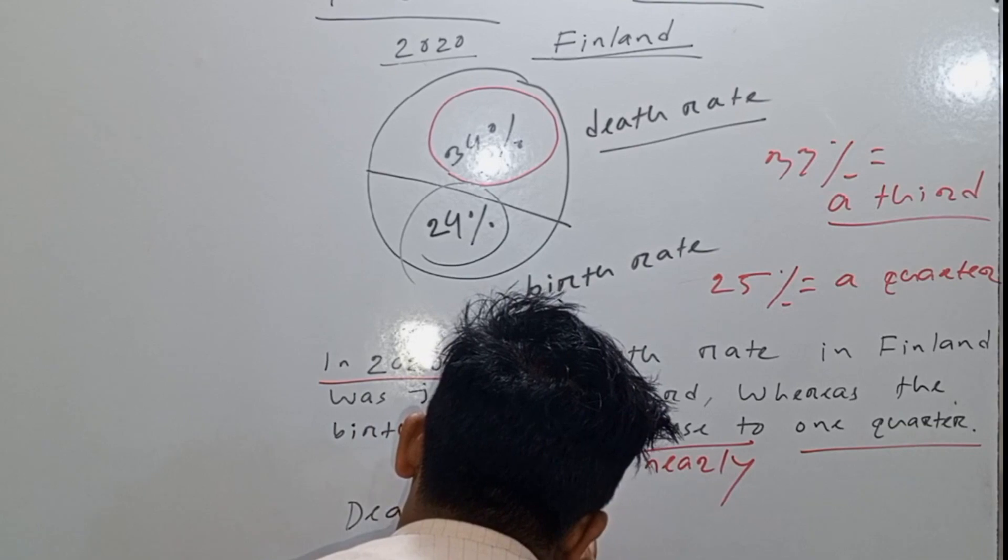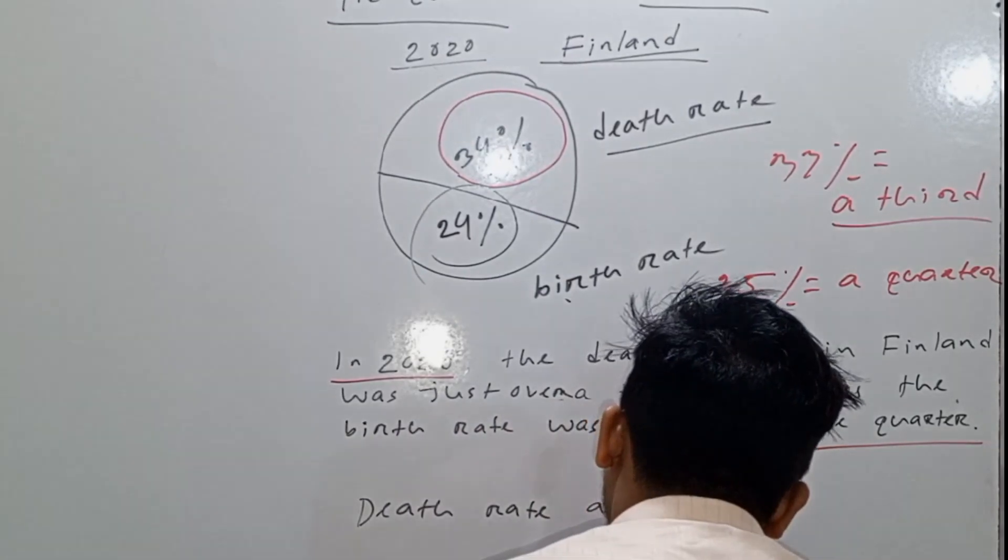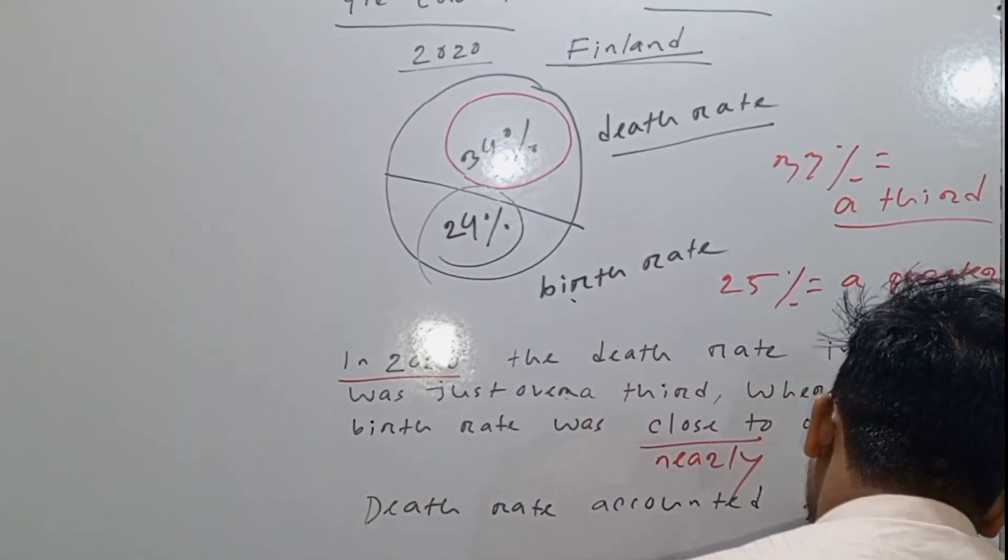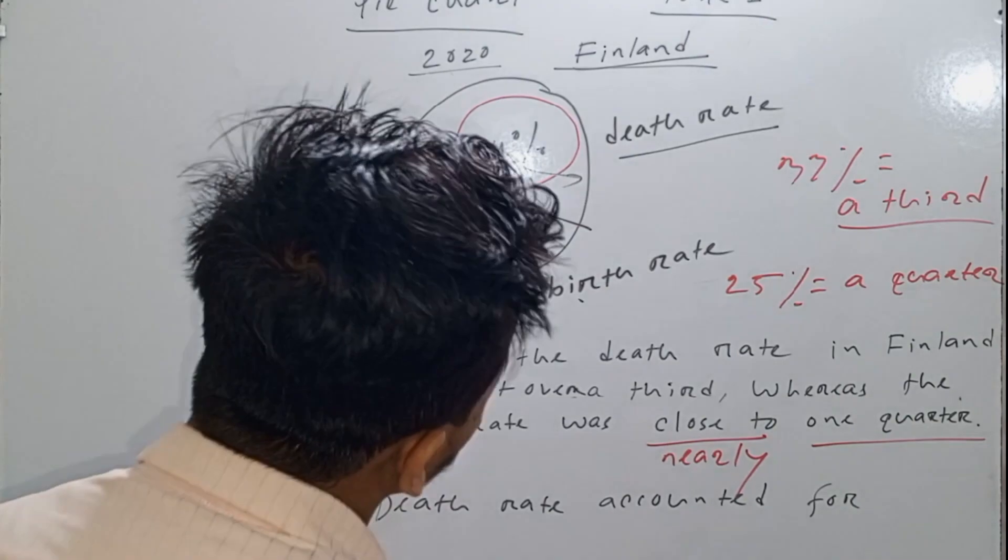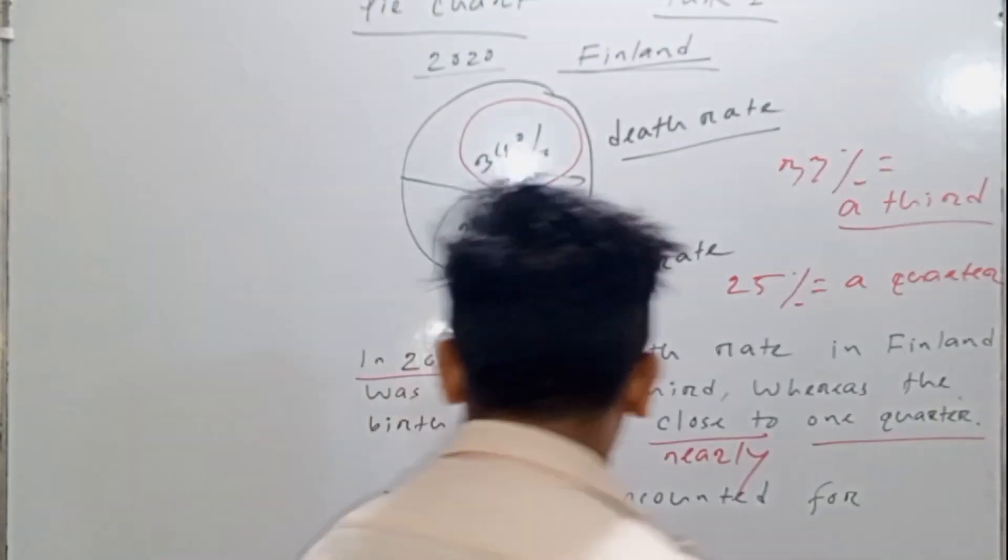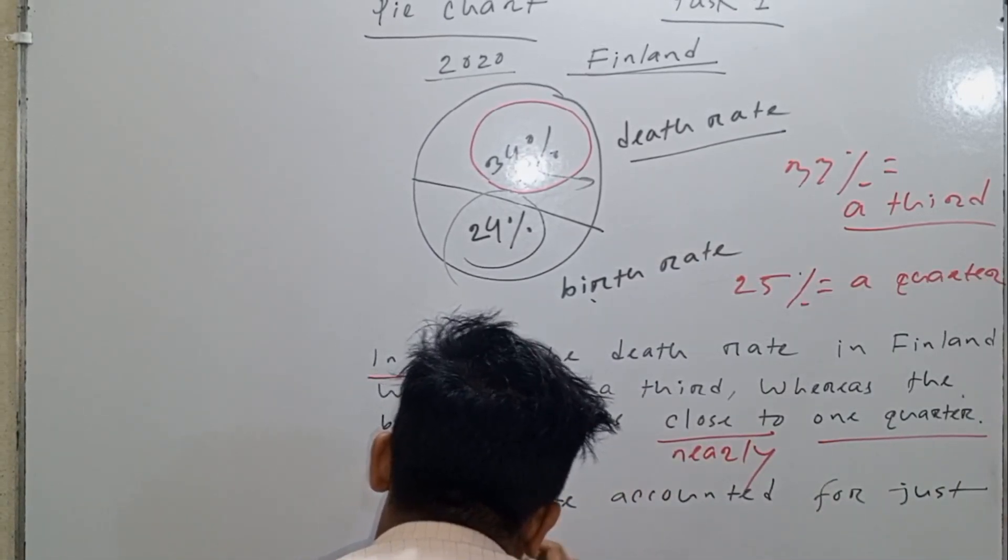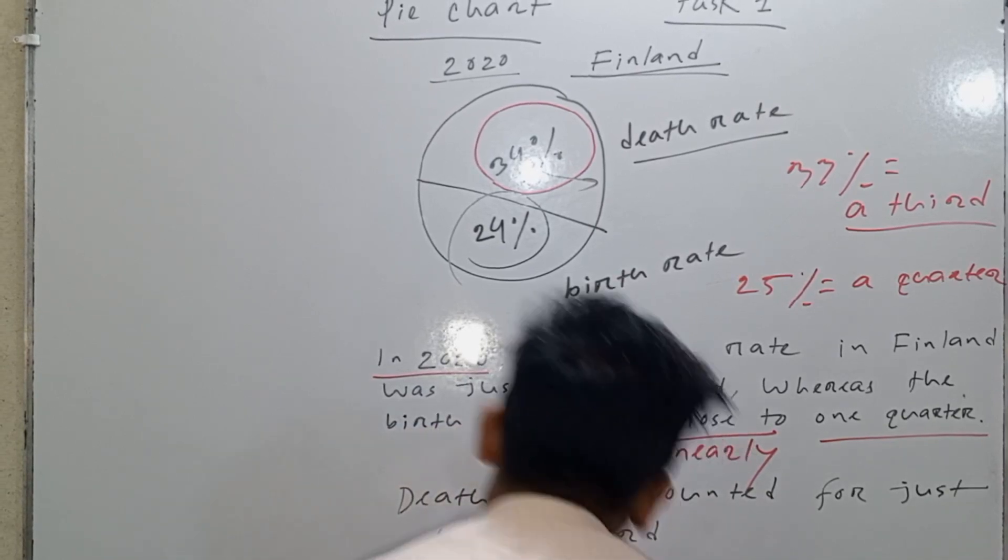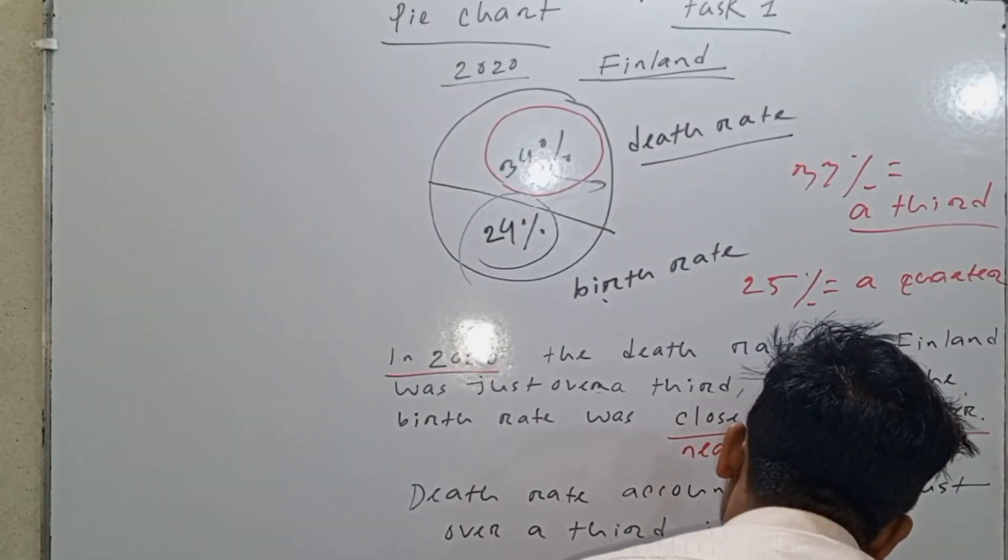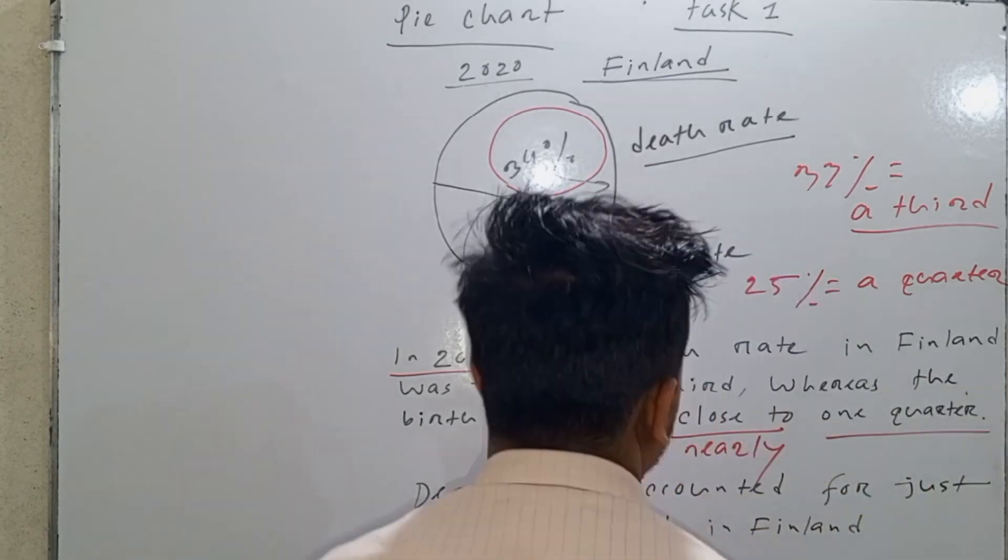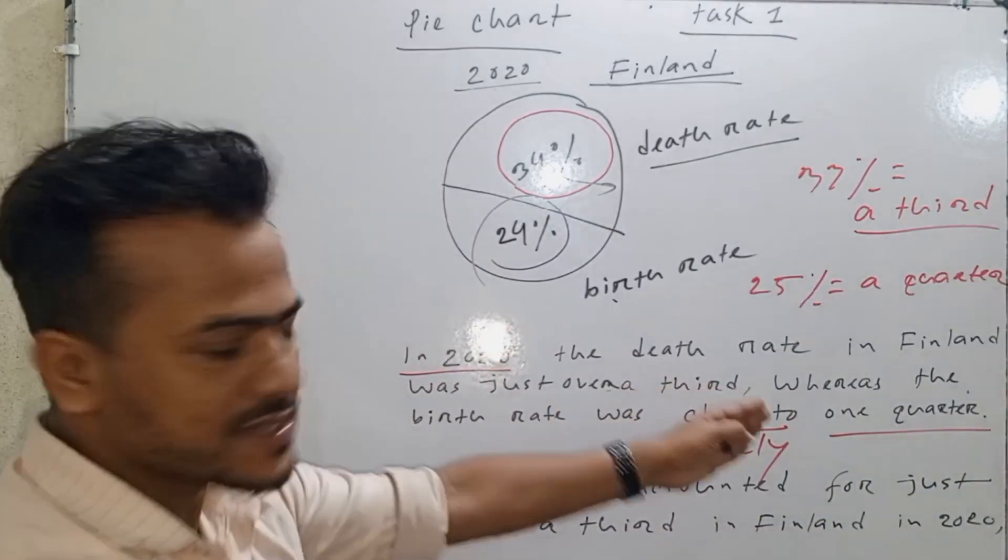Accounted for. Just accounted for, just over a third or about one third. Death rate accounted for just over a third in Finland.